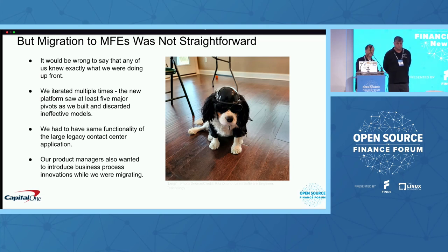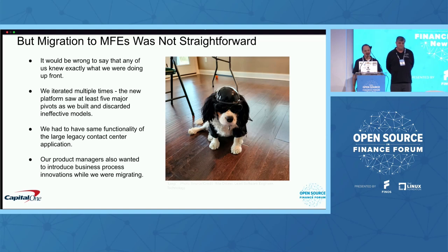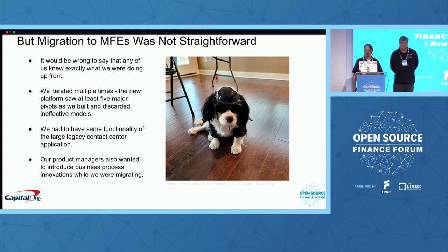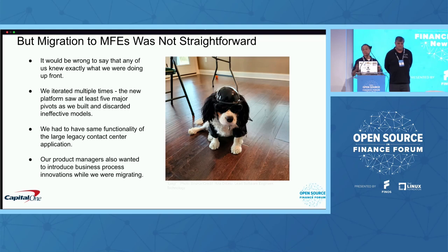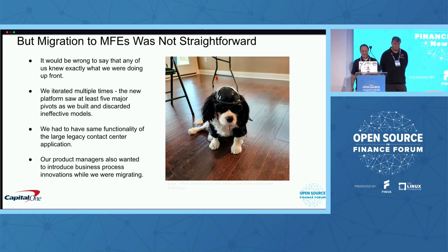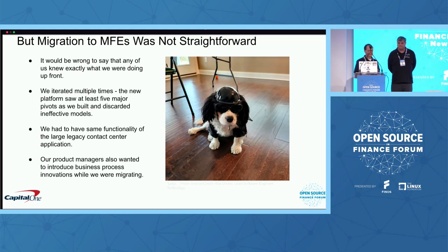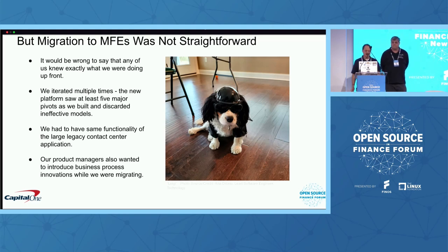This is all a great story, but in 2017 when we were looking at this, I'd say it's safe to say we did not know exactly what we were doing up front. It wasn't like we decided to do it and it was successful — we had to try this about five times. We had to keep pivoting as models were proven to be inefficient, and then fix them.